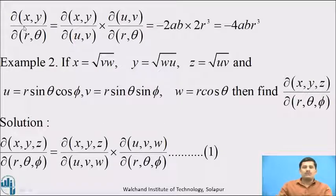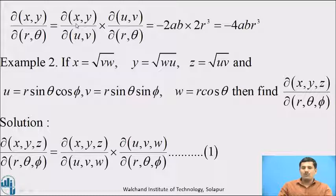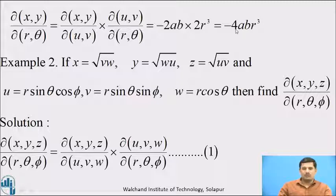The Jacobian of X, Y with respect to R, theta is the product of the two Jacobians: the first Jacobian is minus 2AB and the second Jacobian is 2R cubed, giving the final answer as minus 4AB R cubed.